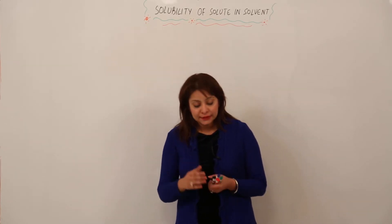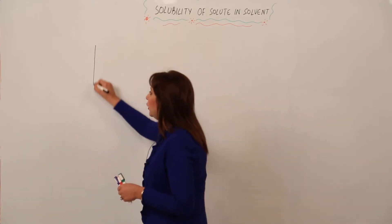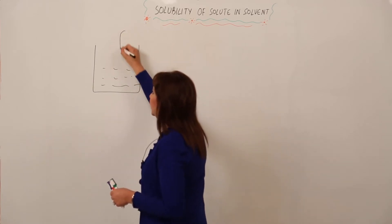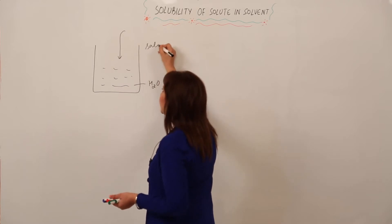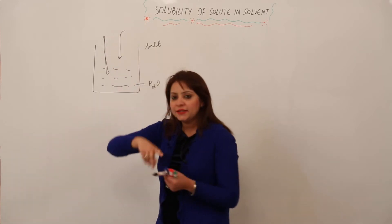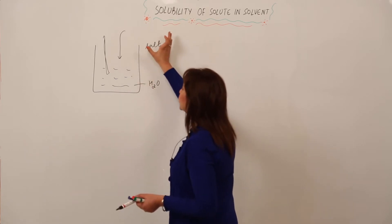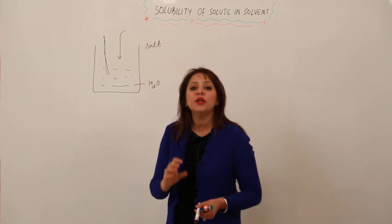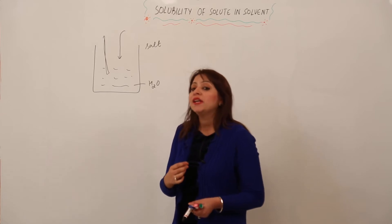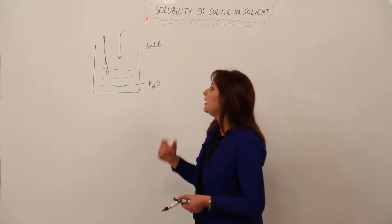What do we mean by solubility? Just look at the board. You have a flask filled with water, and I'm adding salt or sugar to it, then stirring it with a stirrer so that it gets dissolved. How much salt gets dissolved in water indicates the solubility — you can say the solubility of solute in a solvent, or the ability of a solvent to dissolve solute in it.